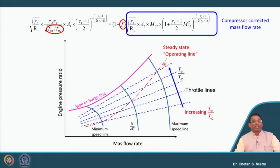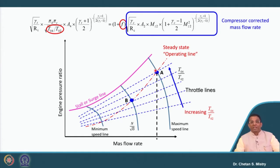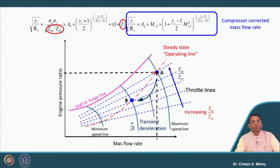Consider an operating point B and an operating point A. Point A is the design condition — designed for a particular corrected mass flow rate and a corresponding pressure ratio. As the engine works under off-design conditions, one throttle condition applies. If we want deceleration of the engine, that corresponds to movement from A to B — we are doing throttling, reducing the turbine entry temperature, which reduces the rotational speed and changes both mass flow rate and pressure ratio.